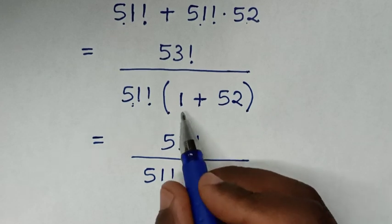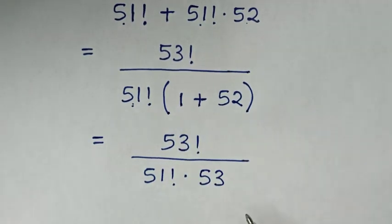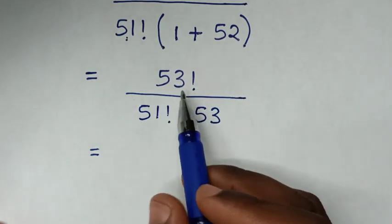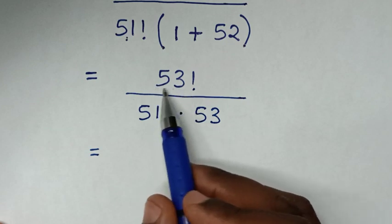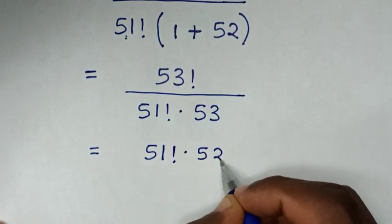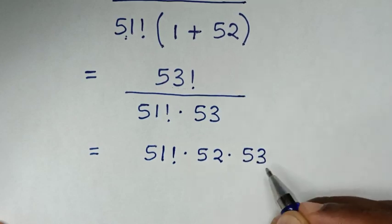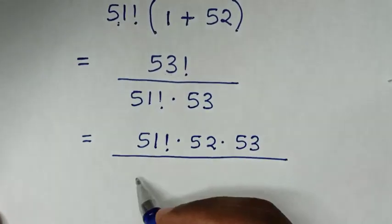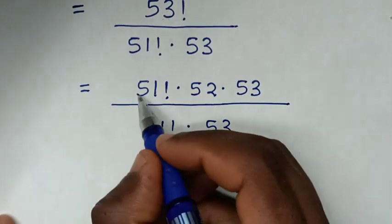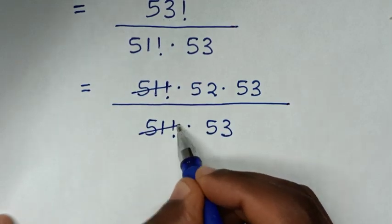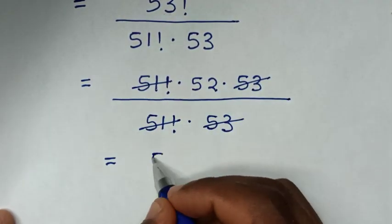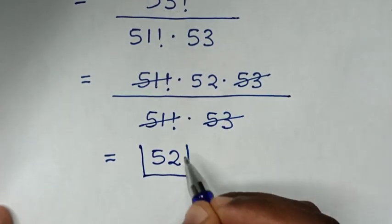The next step: 53 factorial can be expanded as 51 factorial times 52 times 53, over the denominator 51 factorial times 53. To simplify, 51 factorial cancels with 51 factorial, and 53 cancels with 53. So the result equals 52. Therefore 52 is our final answer.